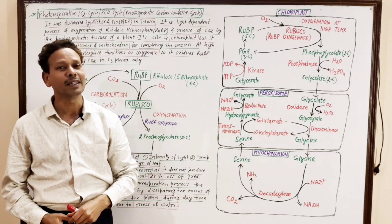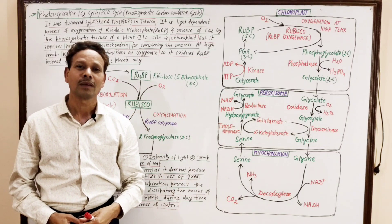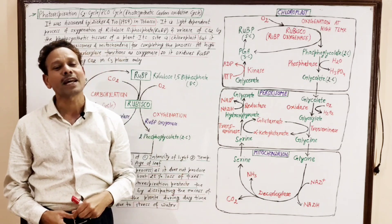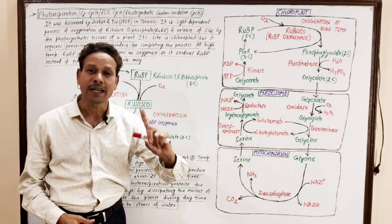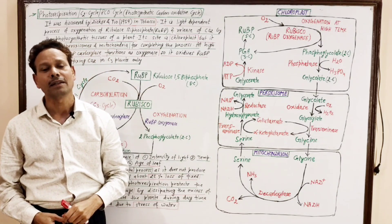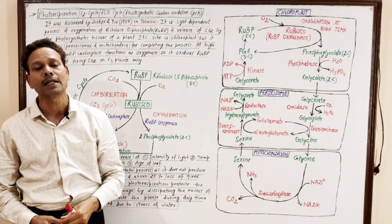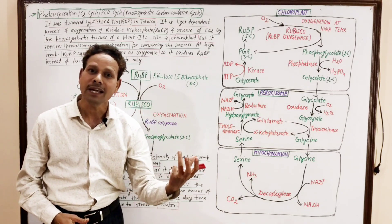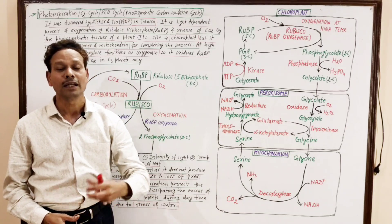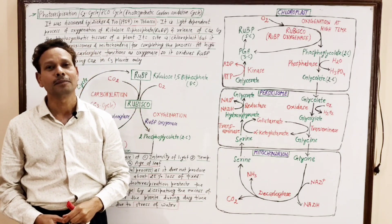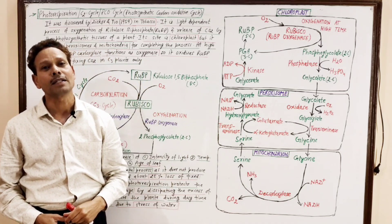In today's lecture, we will cover the C2 cycle. Before this lecture, we discussed the C3 cycle and C4 cycle. As we know, the C3 cycle is a universal cycle that occurs in all photosynthetic plants — both C3 and C4 plants. But the C4 cycle, or Hatch and Slack cycle, occurs only in C4 plants.